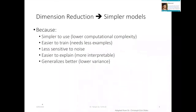Dimensionality reduction gives you simpler models that are easier to use. They normally involve lower computational cost, are easier to train, less sensitive to noise, and easier to explain. Hopefully, when you have enough features selected, the model also generalizes better because you don't overfit to noisy features.